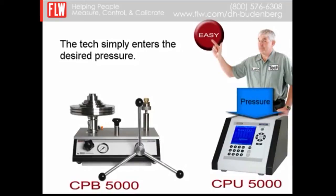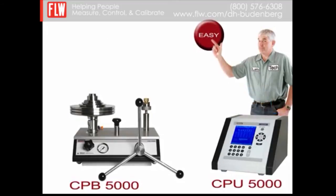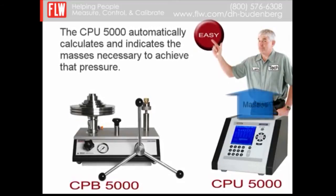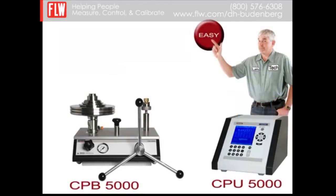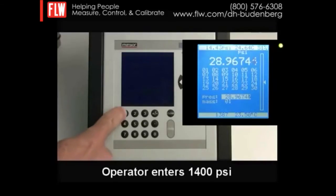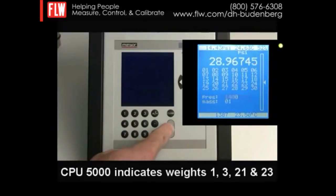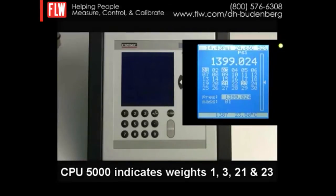The technician simply enters the desired pressure. The CPU5000 automatically calculates and indicates the masses necessary to achieve that pressure. In this example, an operator enters in 1400 psi and masses 1, 3, 21, and 23 are indicated.